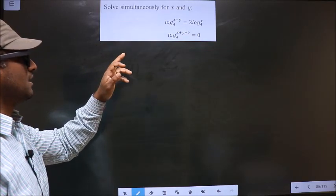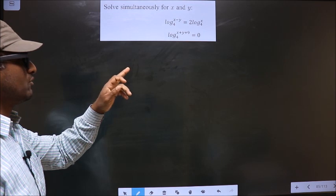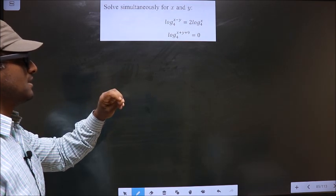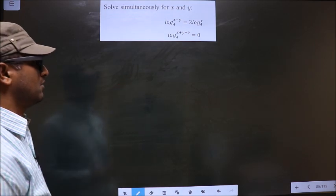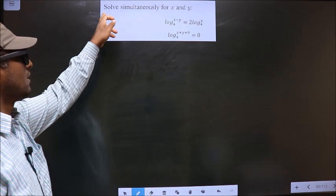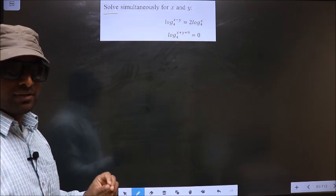Solve simultaneously for x and y: log₄(x - y) = 2log₄(x) and log₄(x + y + 9) = 0. We need to find the values of x and y.